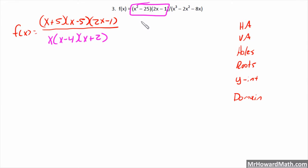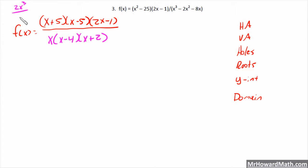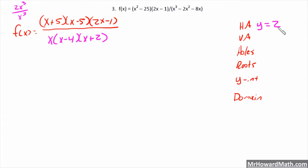We figure out the biggest degree term by multiplying x² times 2x, giving us 2x³ on top. The biggest term on the bottom is x³. So the exponents are the same — both degree 3. We divide their coefficients: the coefficient is 2 on top and 1 on the bottom, so 2 divided by 1 is 2. Our horizontal asymptote is y = 2.